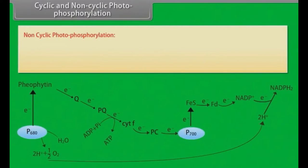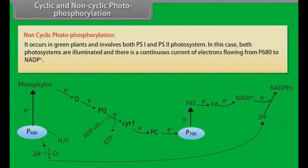Non-cyclic photophosphorylation: It occurs in green plants and involves both PS1 and PS2 photosystems. In this case, both photosystems are illuminated and there is a continuous current of electrons flowing from P680 to NADP+.